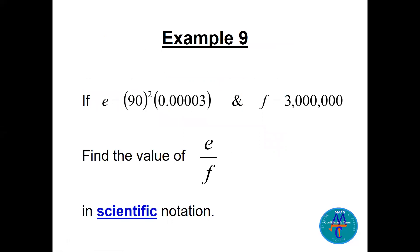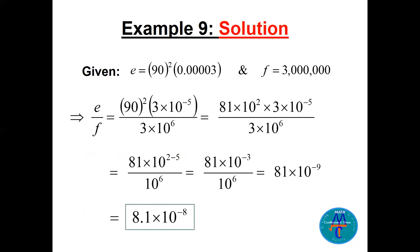Here is example number nine from lecture six. E equals 90 squared times 0.00003, and F equals 3 million. Find the value of E divided by F in scientific notation. Please pause the video and try it on paper. The answer you should get is 8.1 times 10 to the power minus 8.